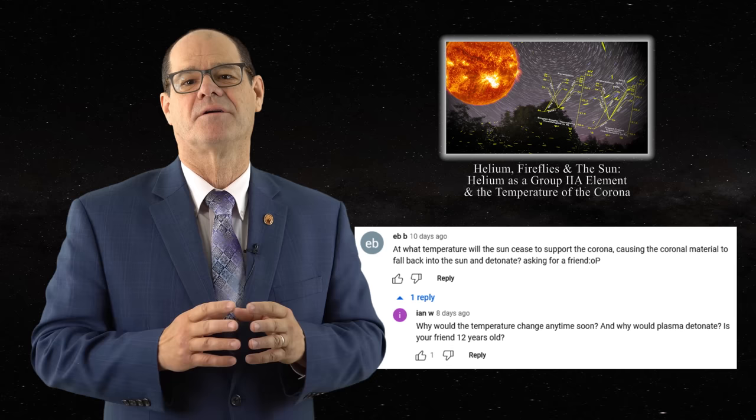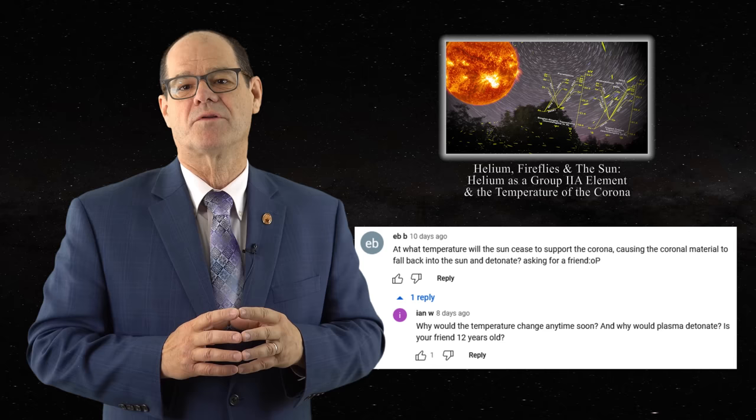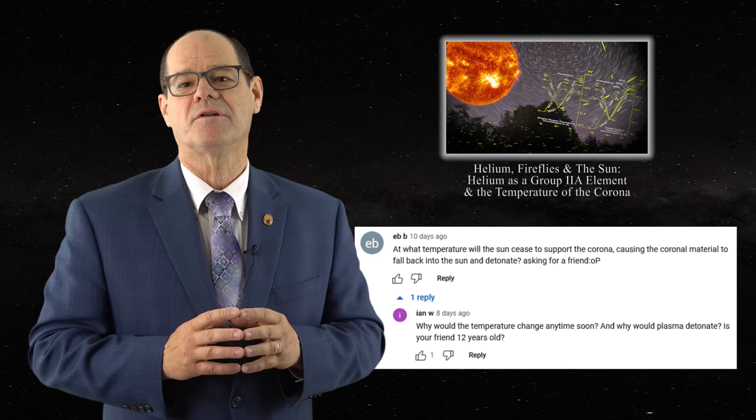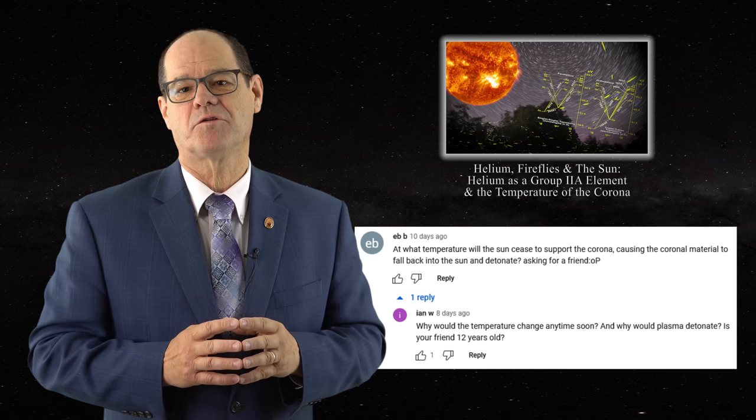The question assumes that the Sun is a gaseous plasma, because it is only in the standard solar model that the need to support the corona using temperature is even necessary. In the standard model, if the temperature of the solar corona is not at millions of degrees as currently assumed, then the corona would collapse. In the standard solar model, elevated temperatures are also utilized not only to support the corona but to help drive the solar wind.